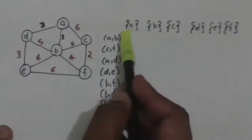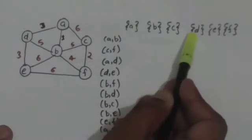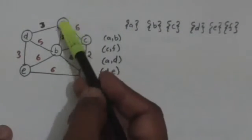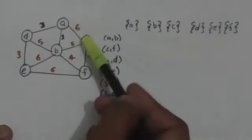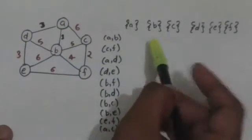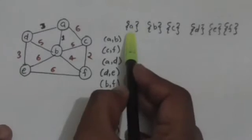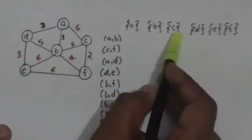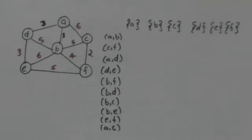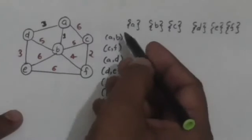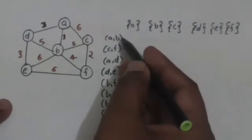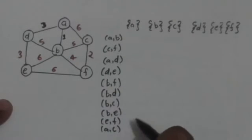Now we have put all vertices of this graph in a separate set. This graph has vertices A, B, C, D, E, and F. So here we have put all these vertices in separate sets. Now we will scan all the edges of this graph which are written in increasing order by weight.